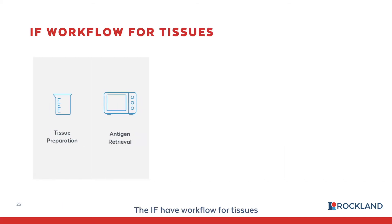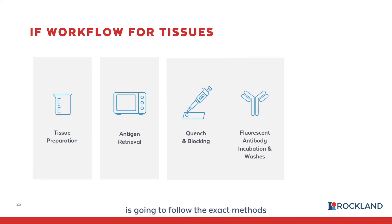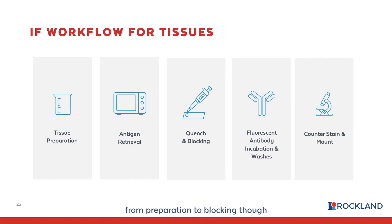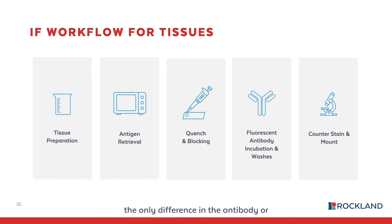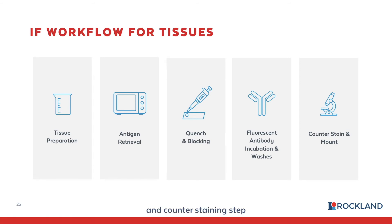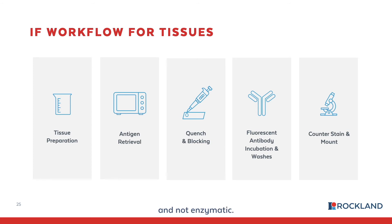The IF workflow for tissues follows the exact same methods from preparation to blocking as for cells, though without blocking for endogenous enzymes since this method utilizes fluorescent dyes. The only difference in the staining and counterstaining steps is that the antibody conjugates, amplification reagents, and counterstains are fluorescent and not enzymatic.